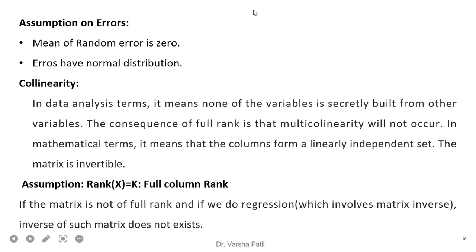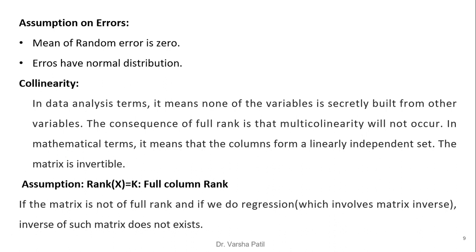For the derivation we make assumptions on the error terms. The mean of the random error is zero, because some errors are positive, some are negative, and points exactly on the line have error zero. Errors are assumed to have a normal distribution. Collinearity is a very important consideration in multiple linear regression — it means none of the variables is secretly built from other variables. We assume the rank of X equals k, which is full column rank. If the matrix is not full rank and we attempt a regression involving a matrix inverse, the inverse does not exist, so we must deal with the collinearity condition.